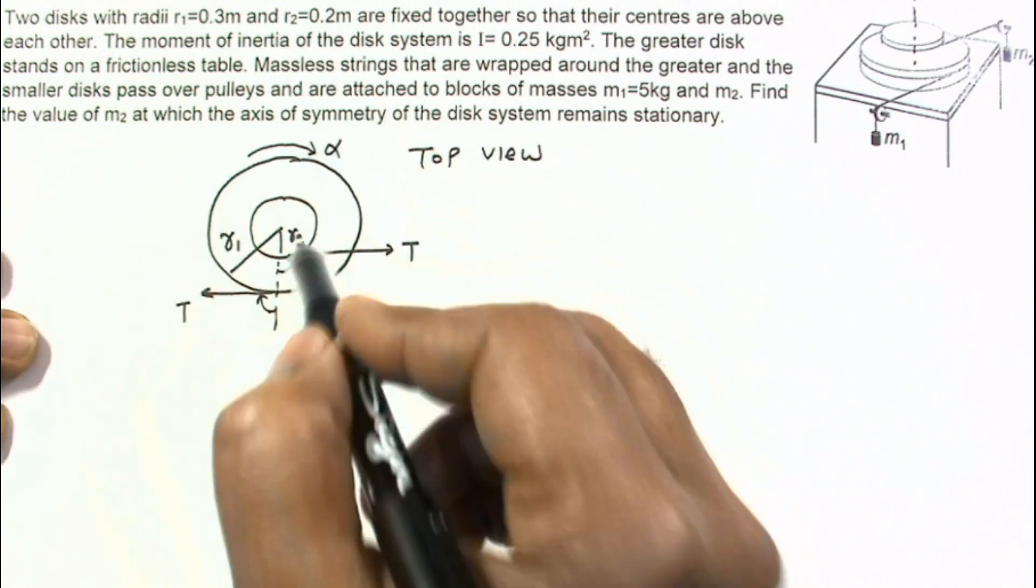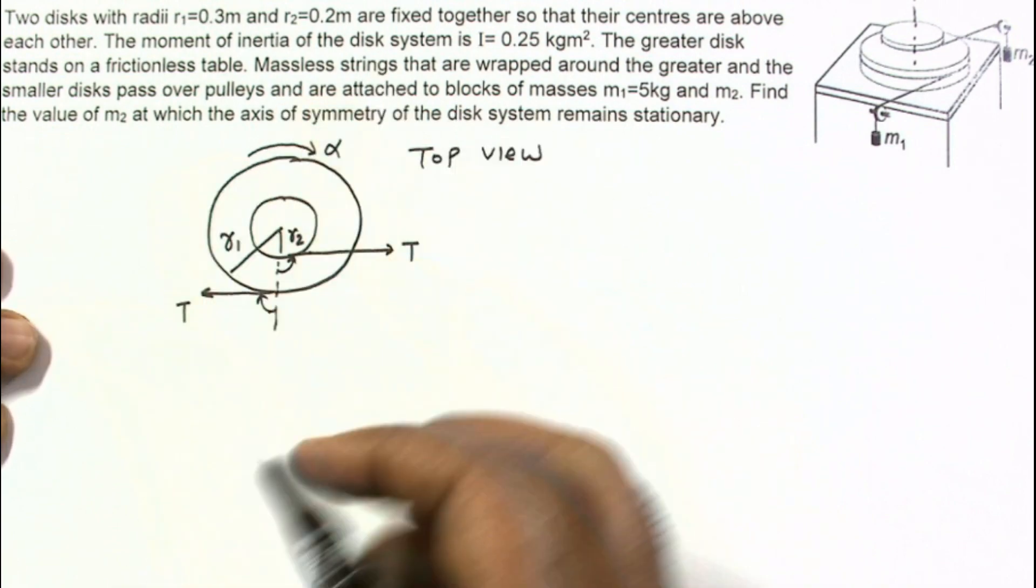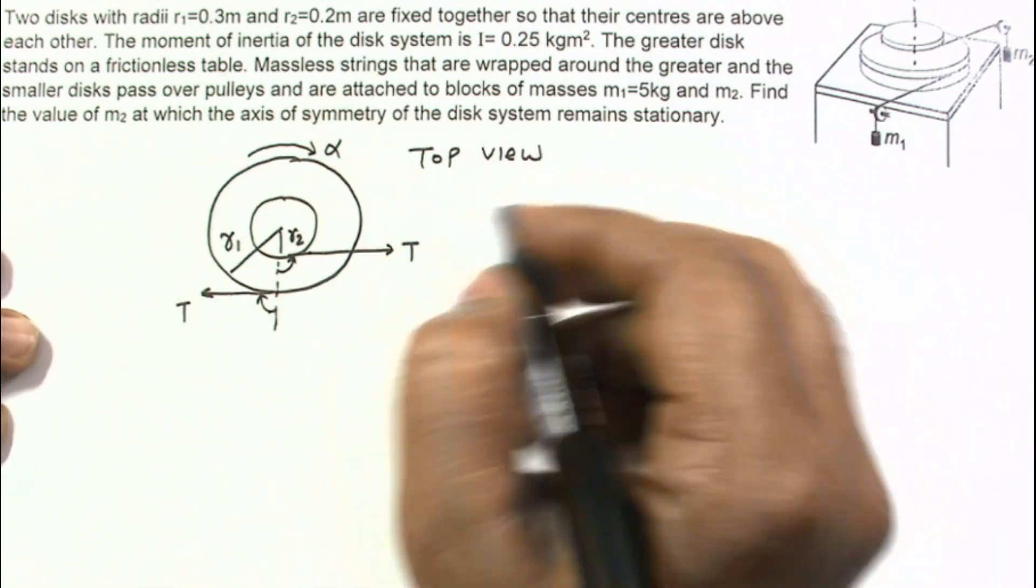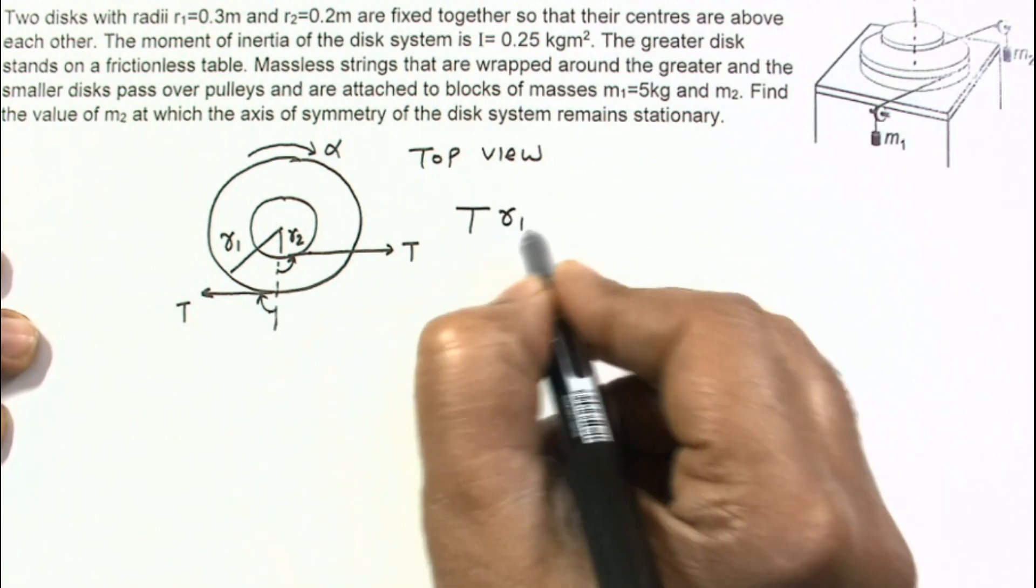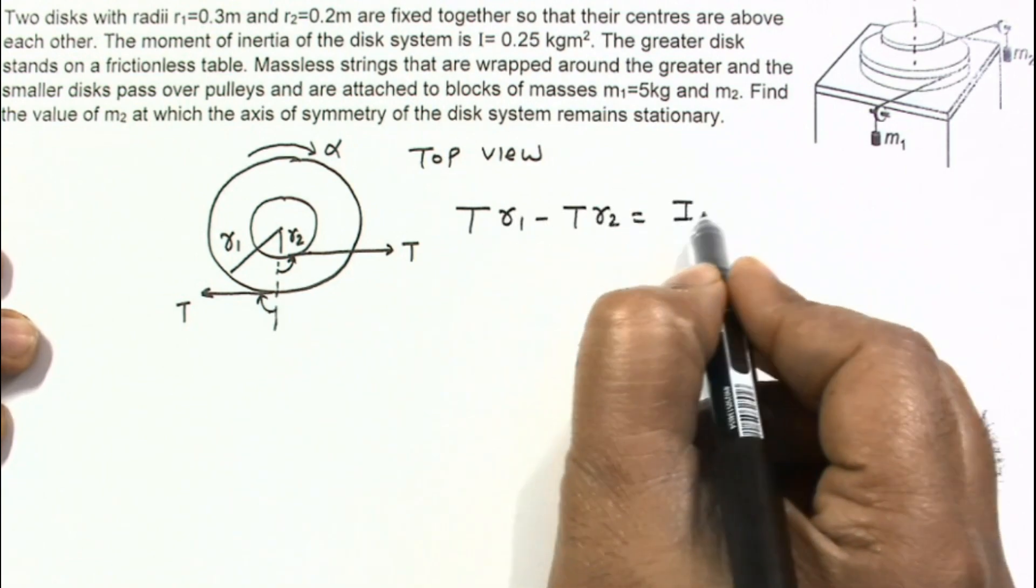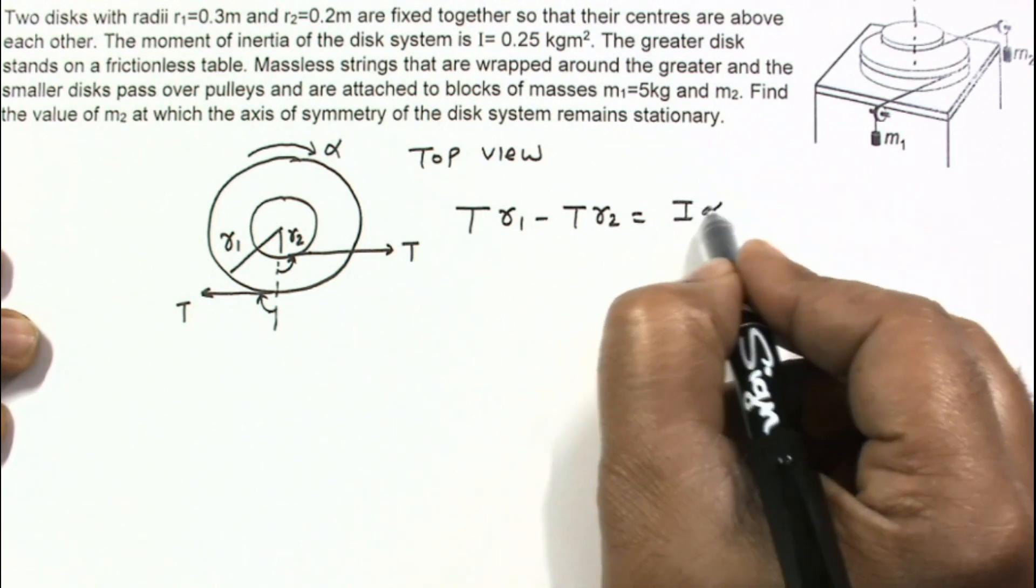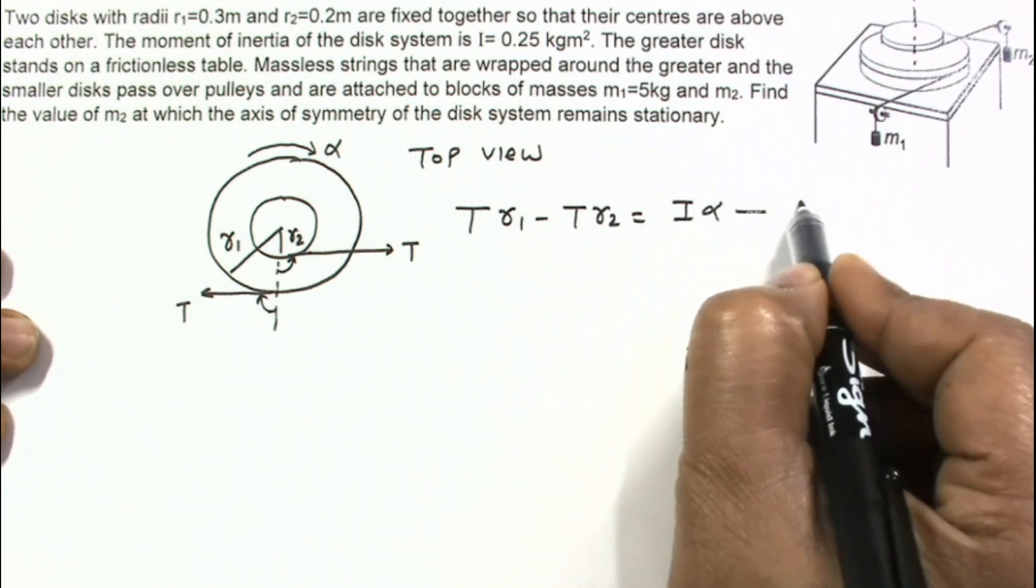And angular acceleration of the disc system will be in the clockwise direction. I am writing the equation for torque: T times R1 minus T times R2. This is equal to I times alpha. This is equation number one.